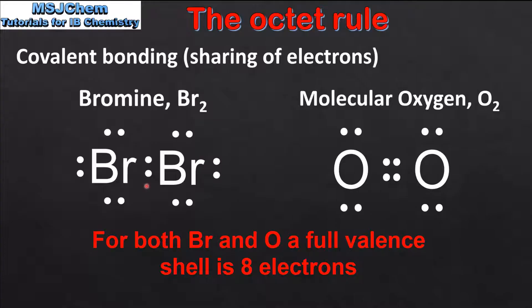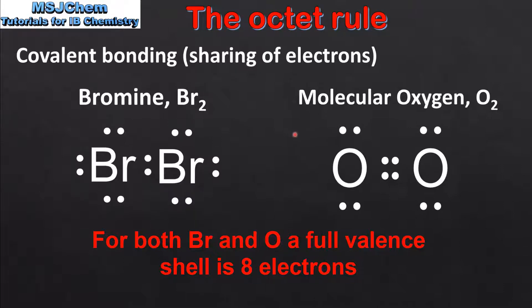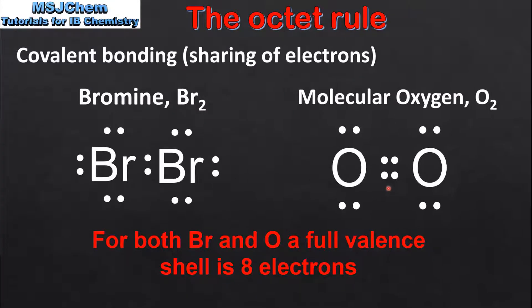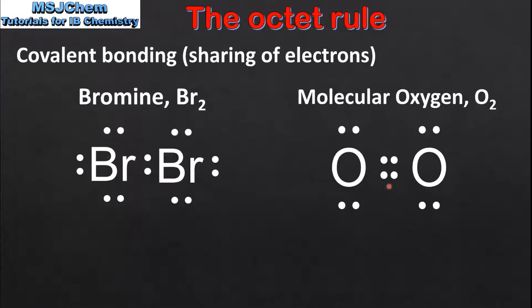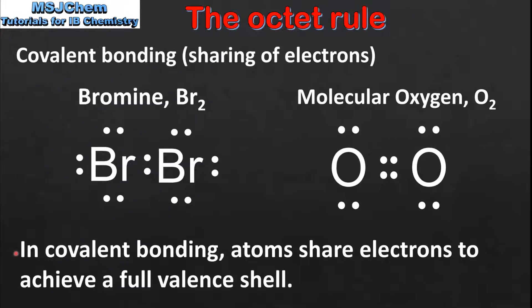A single covalent bond is composed of two electrons. Each bromine atom has seven valence electrons, so by sharing these two electrons each bromine atom can achieve a full valence shell. Next we'll look at O2. An oxygen atom has six electrons in its valence shell. A double covalent bond is composed of four electrons, so by sharing these four electrons each oxygen atom can achieve a full valence shell. In summary, in covalent bonding atoms share electrons to achieve a full valence shell.